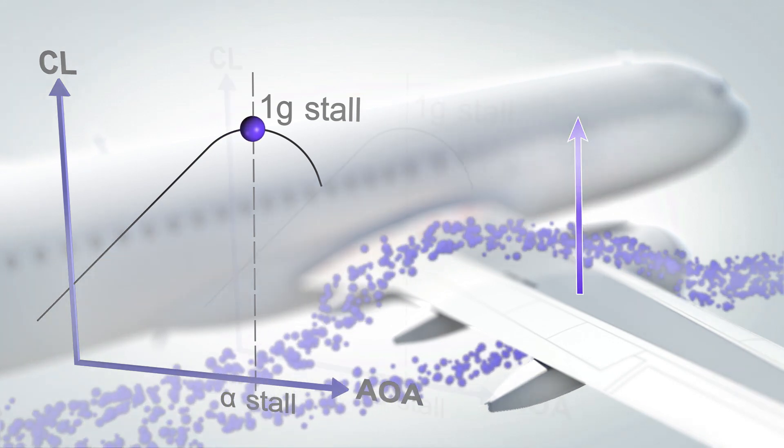In manual flight, any sudden variation to the load factor when the aircraft levels off can also cause a rapid variation of the V-alpha prot strip.